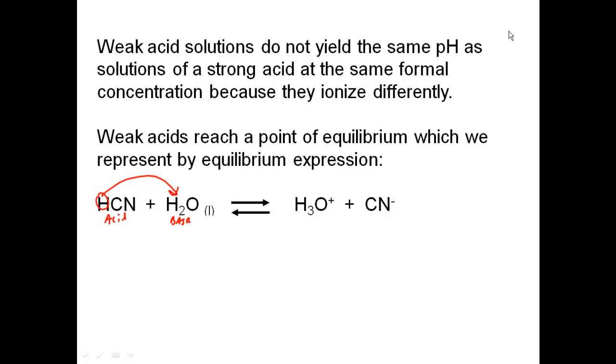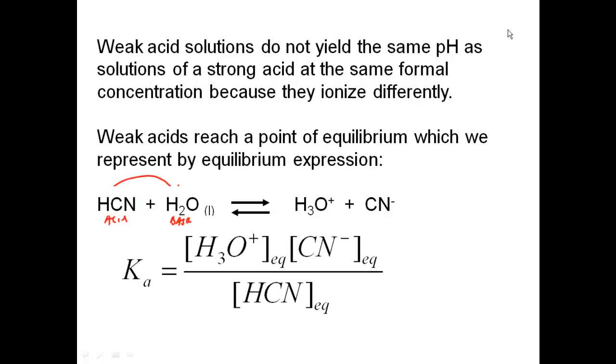And we can write a K expression for this, which would be your products. The product of your products raised to the coefficient divided by the product of your reactants raised to the coefficients, which would give us something that looks as follows. Concentration of my hydronium times the concentration of CN minus divided by the concentration of HCN. This is written the same way as any other K. It's going to be unitless. It's the case that it's temperature dependent.